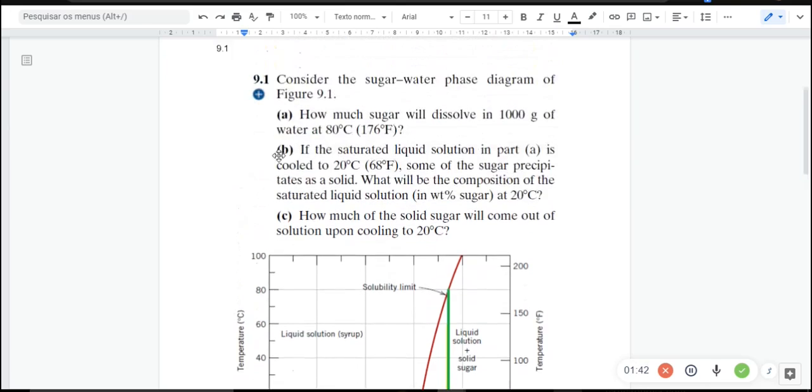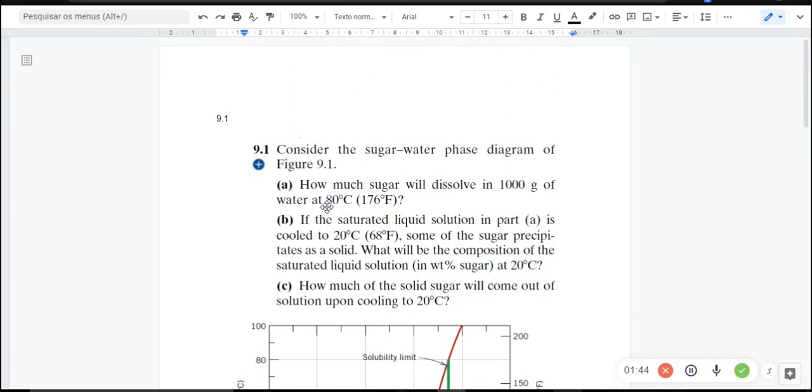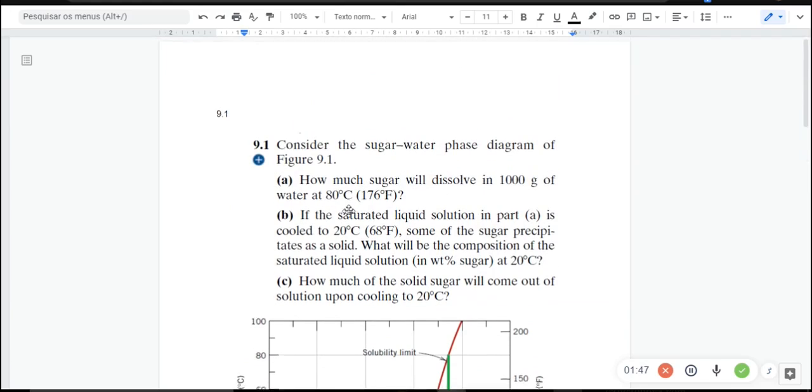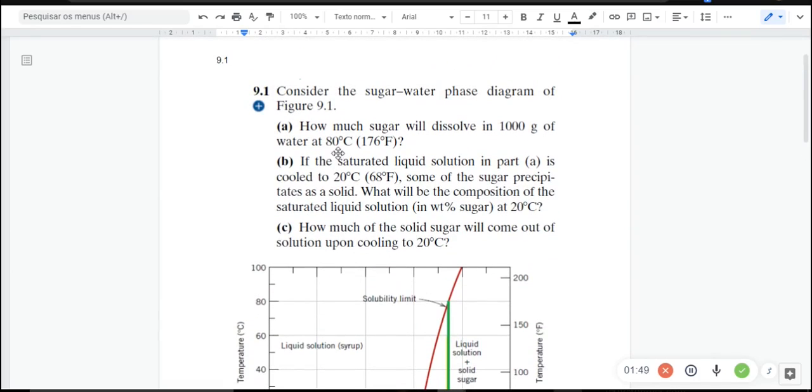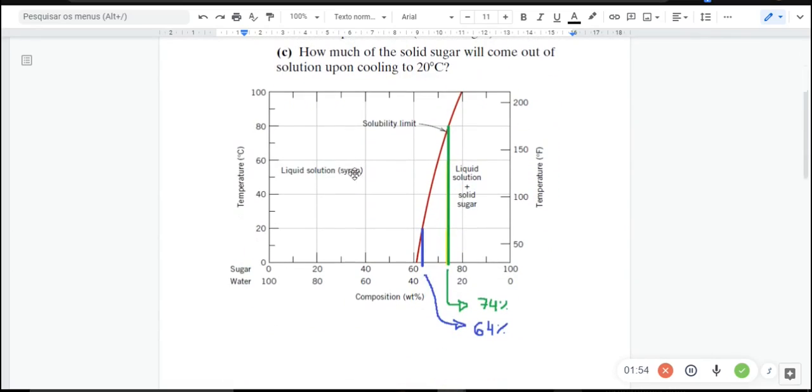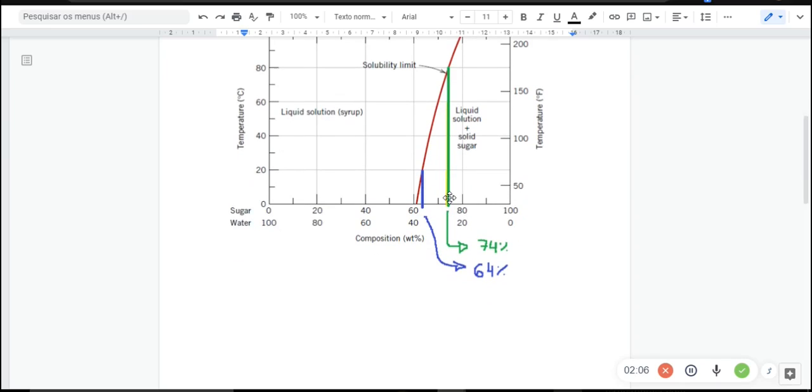The question is, at the temperature of 80 Celsius degrees, how much sugar will be dissolved in 1000 grams of water? At this temperature of 80 Celsius degrees, we draw a green line here and we can see a composition of 74% of sugar.